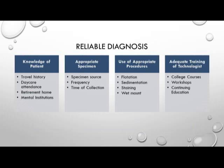For a reliable diagnosis of a parasitic infection, we need knowledge of the patient, which can include travel history, as certain parasitic infections are endemic to specific regions of the world. Other risk factors include daycare, where children with no concept of germ theory are living in close environments, as well as retirement homes or mental institutions, which tend to have higher probability of parasitic infection spreading when one patient is infected.